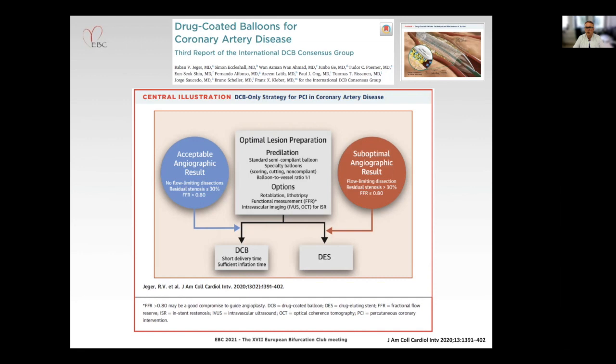The basic principle of DCB only is presented here. Lesion preparation is the most important part of the interventional procedure. After having the result of the lesion preparation, you have to decide if this lesion is suitable for DCB only or if there is a need for a permanent stent. We defined a so-called acceptable angiographic result, which means no flow-limiting dissections.